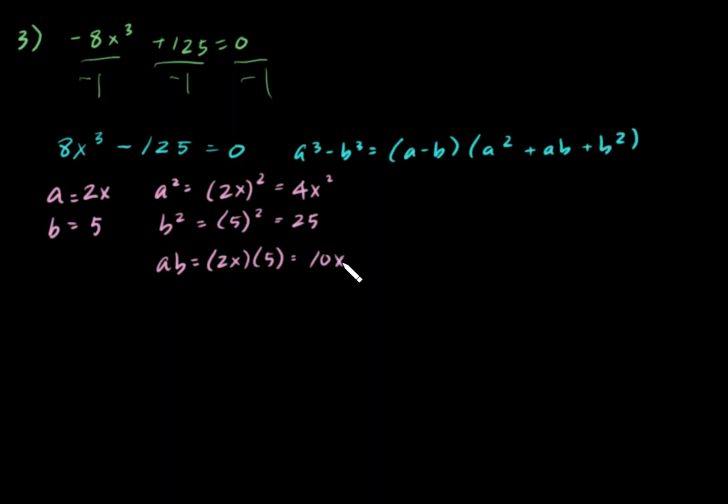Now, we're all set to put it into our formula. Let's go ahead and put it into our formula. So, we have 2x minus 5 times A squared, which is 4x squared, plus 10x, plus 25, and this is set equal to 0.